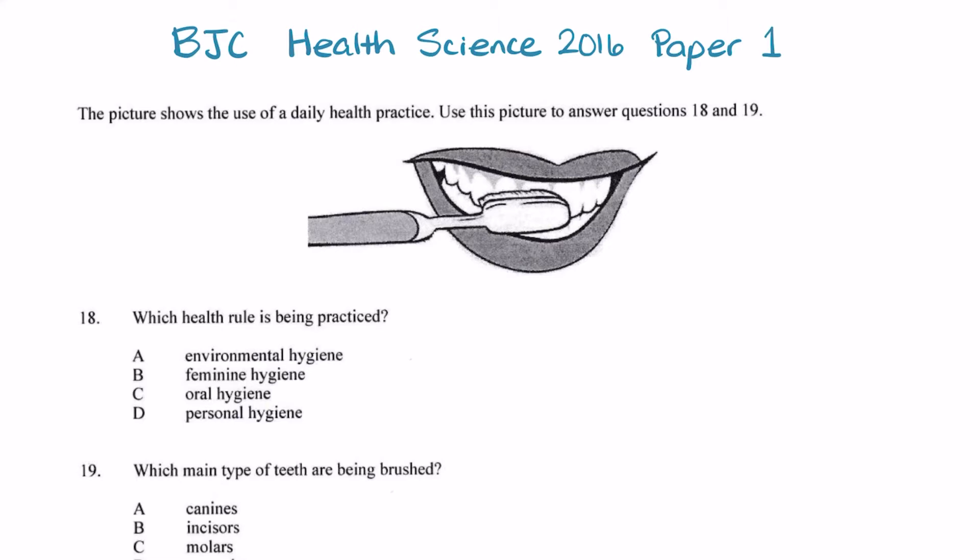It says the picture shows the use of a daily health practice. Use this picture to answer questions 18 and 19. Question 18 says, which health rule is being practiced? You're given four options: environmental hygiene, feminine hygiene, oral hygiene, and personal hygiene.